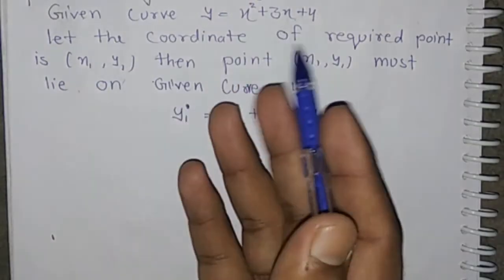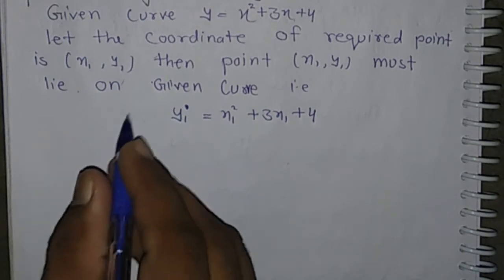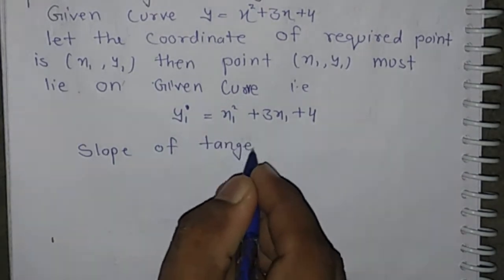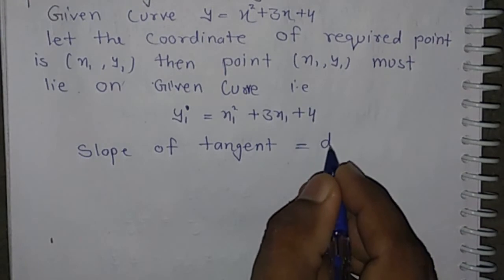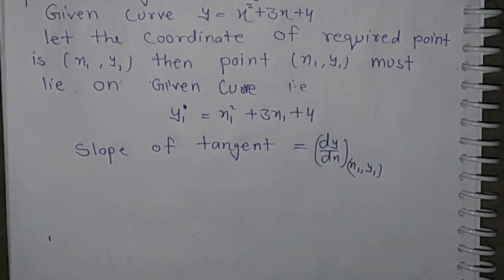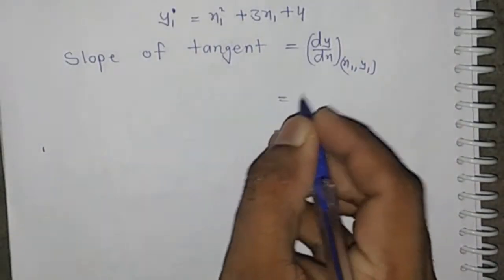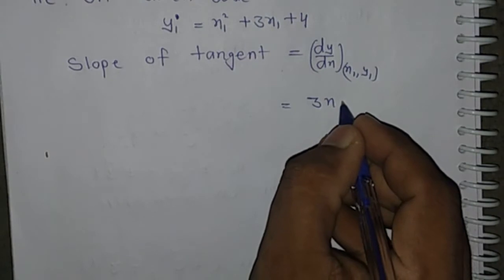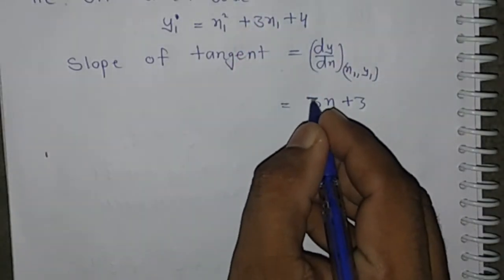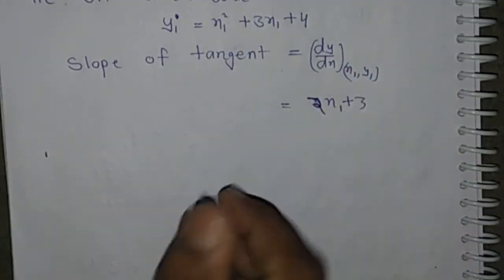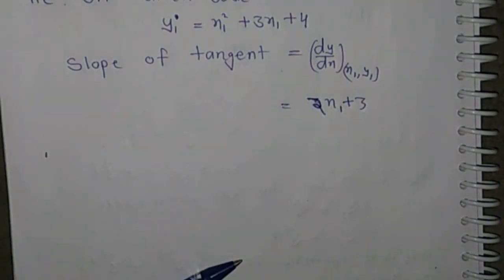Now find the slope of the tangent: dy/dx at point (x₁, y₁). We differentiate the given function: dy/dx = 2x + 3. At point (x₁, y₁), the slope of the tangent is 2x₁ + 3.